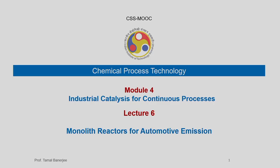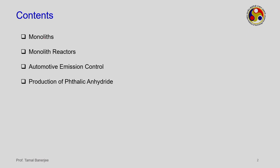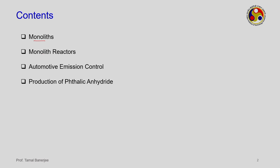Monolith reactors, as the name suggests, are specially useful for automotive emission. These are mostly used in automobiles although there are some applications concerning the chemical industry which we will touch upon. The contents of this lecture: we will see what are monoliths, what the structure looks like - they are a type of structured reactors - and with this particular structure how we can use them in monolith reactors.